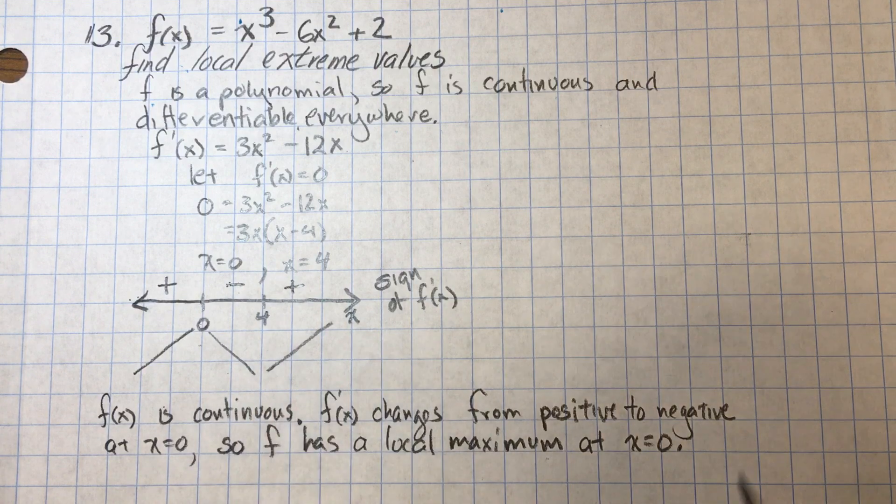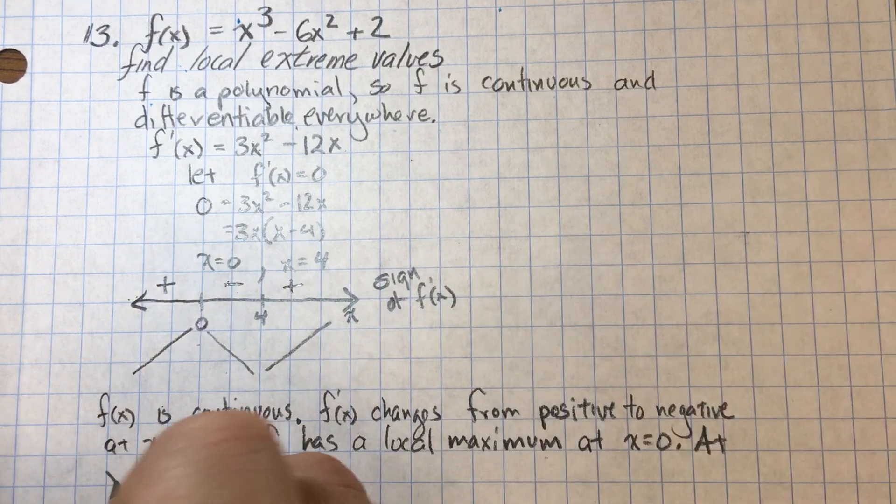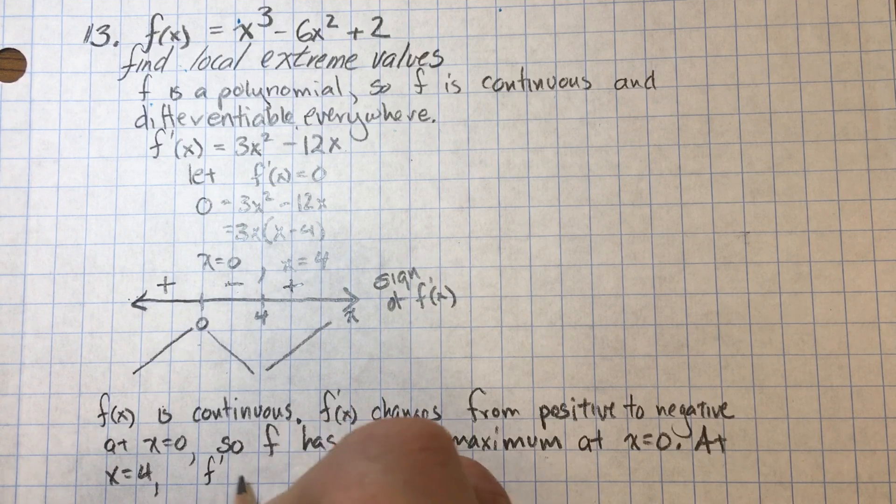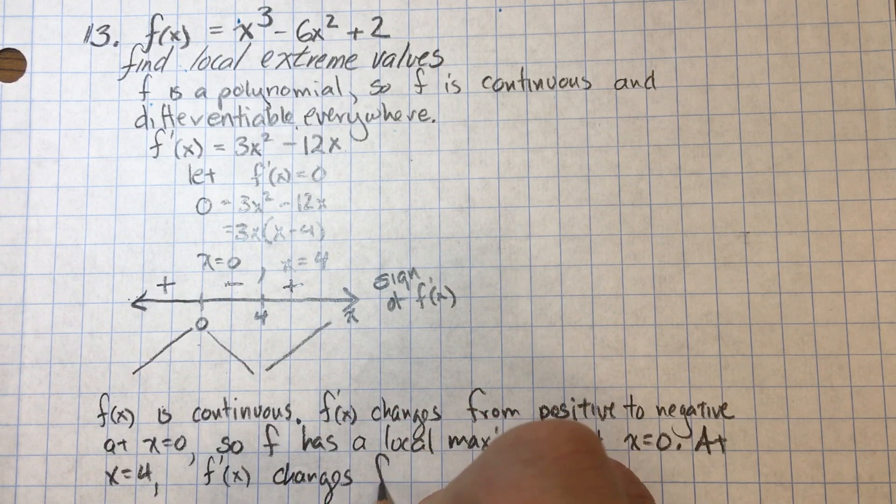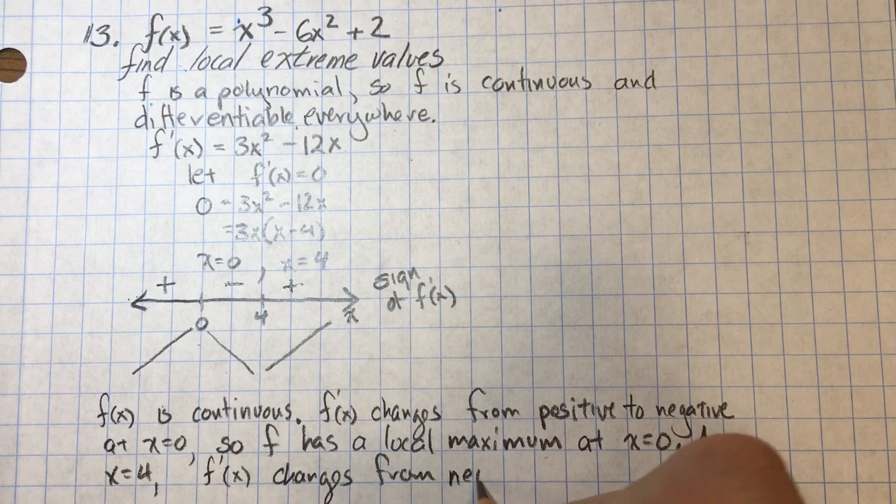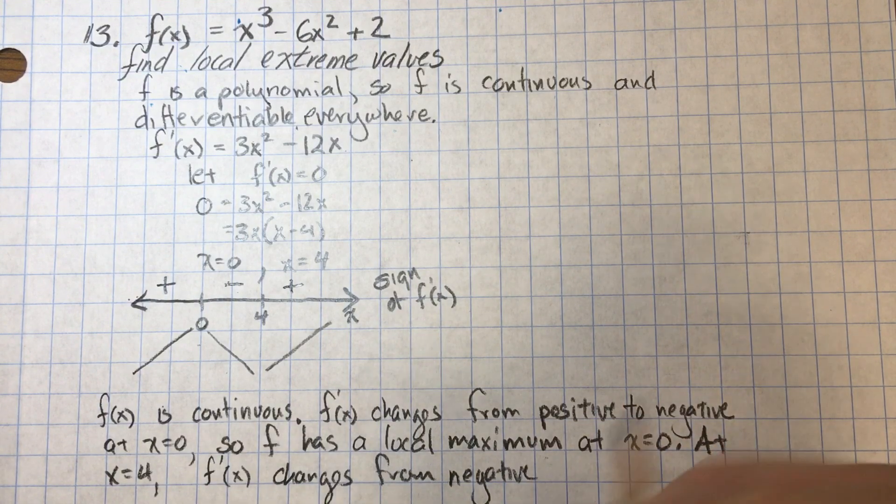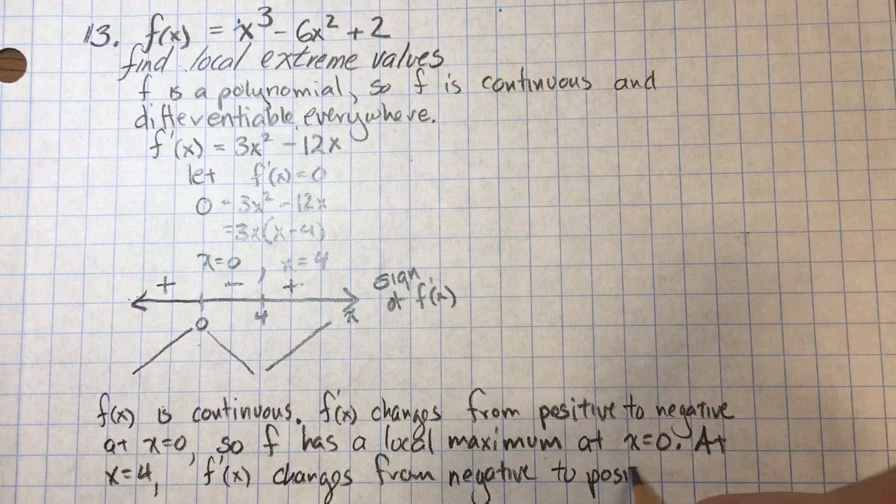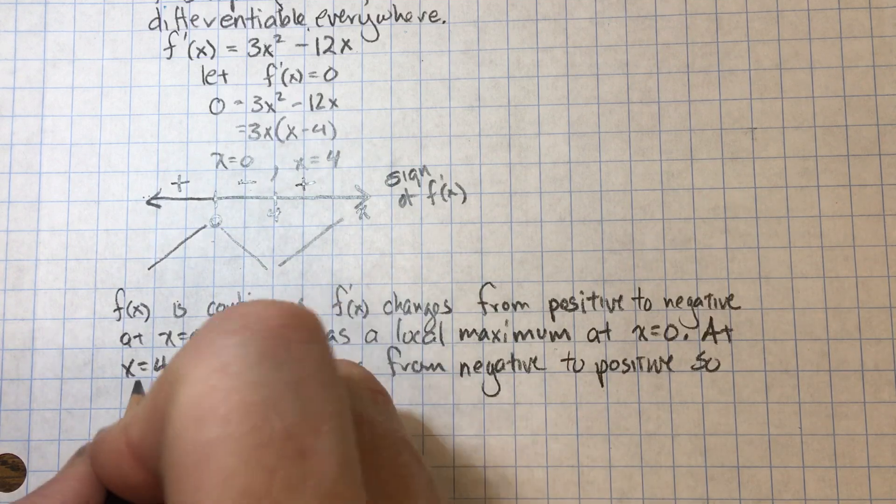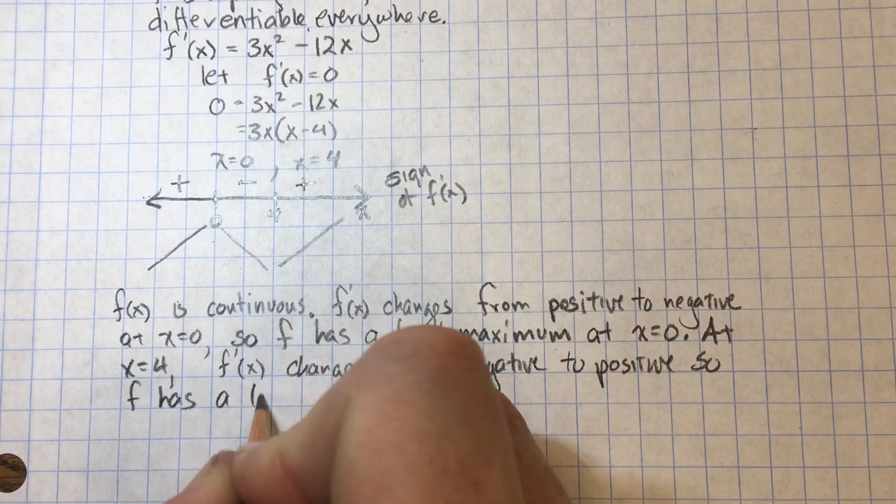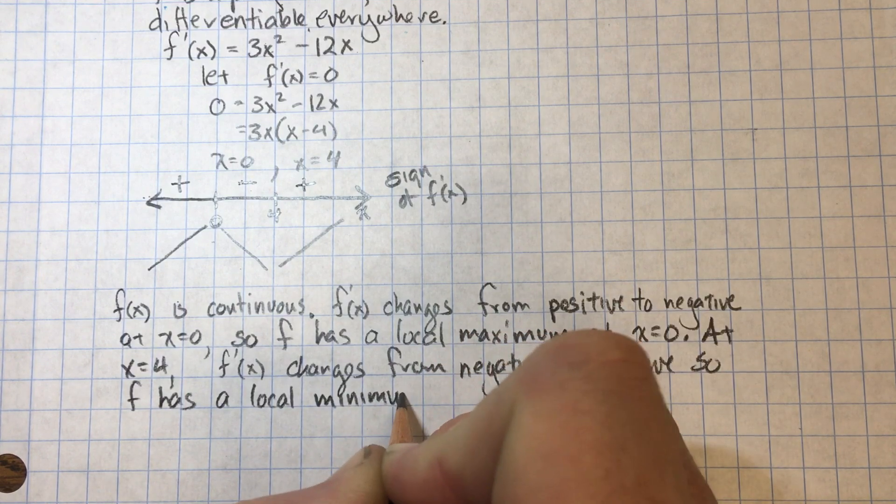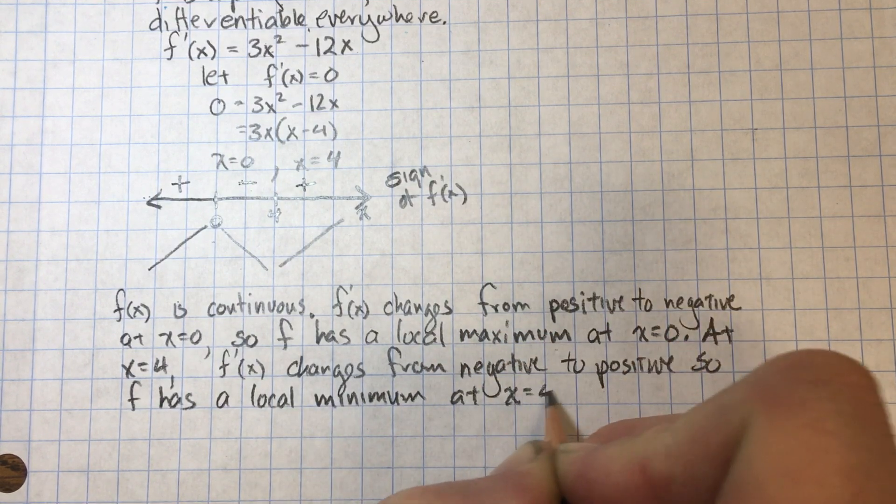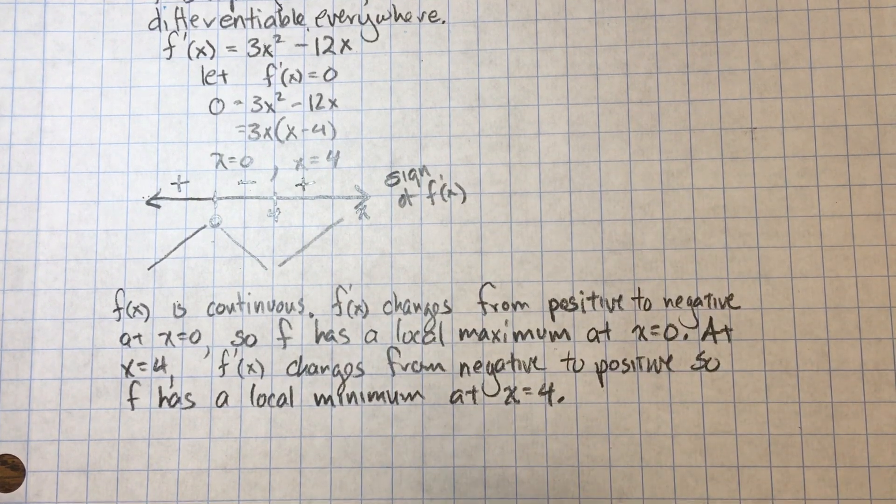Let's see what happens at X equals four. At X equals four, F prime changes from negative to positive. So F has a local minimum at X equals four.